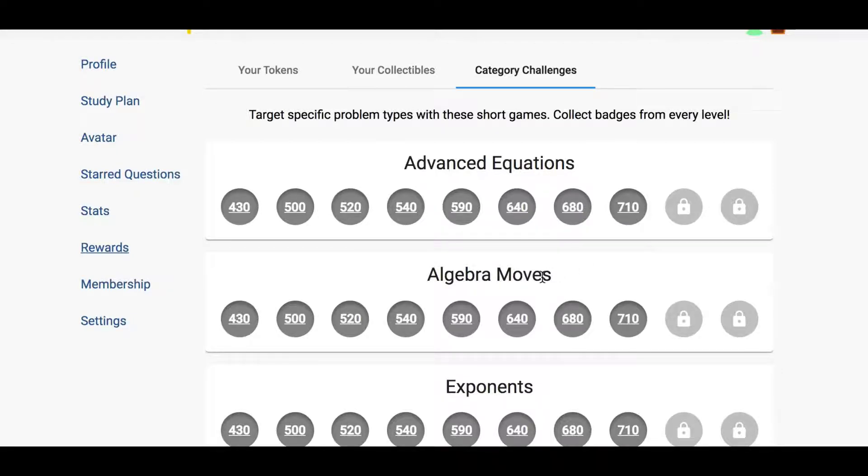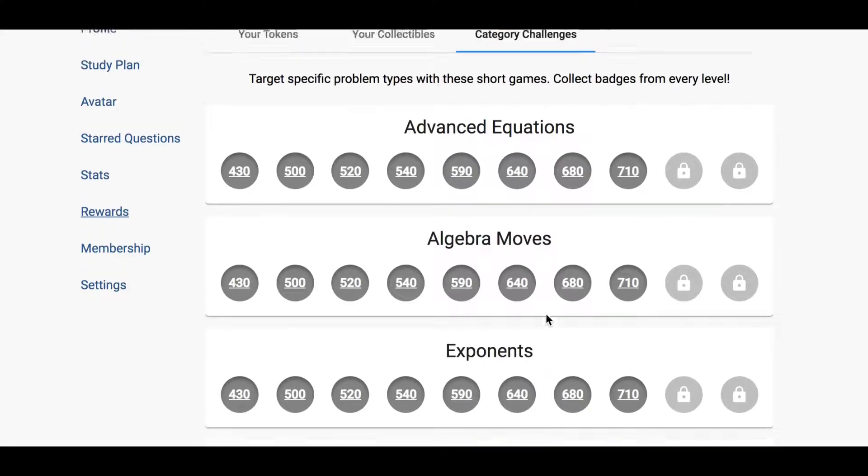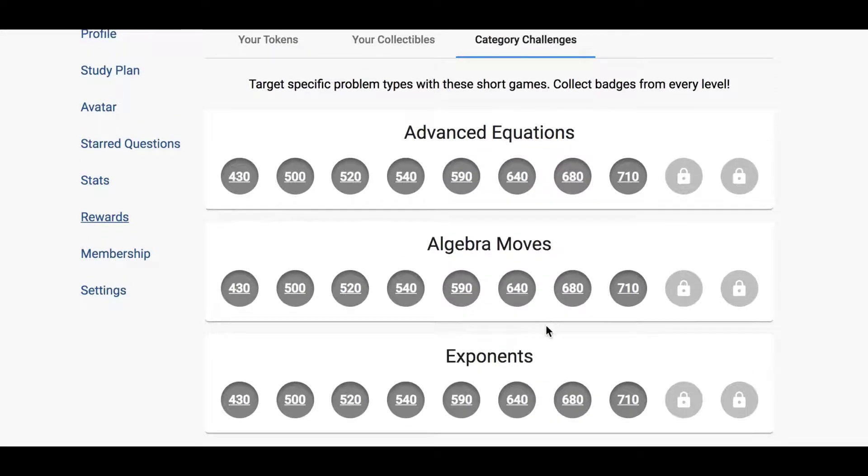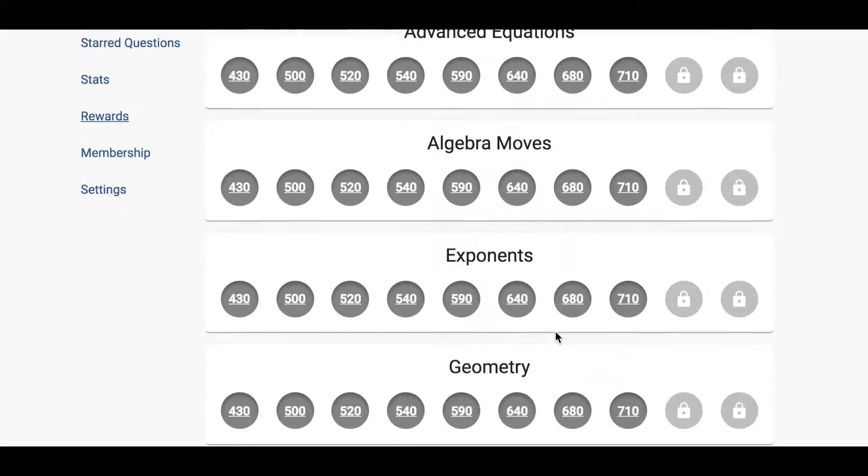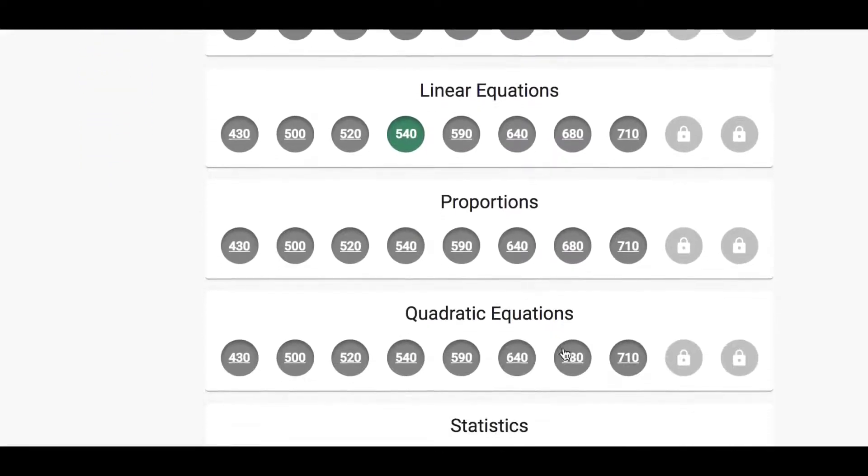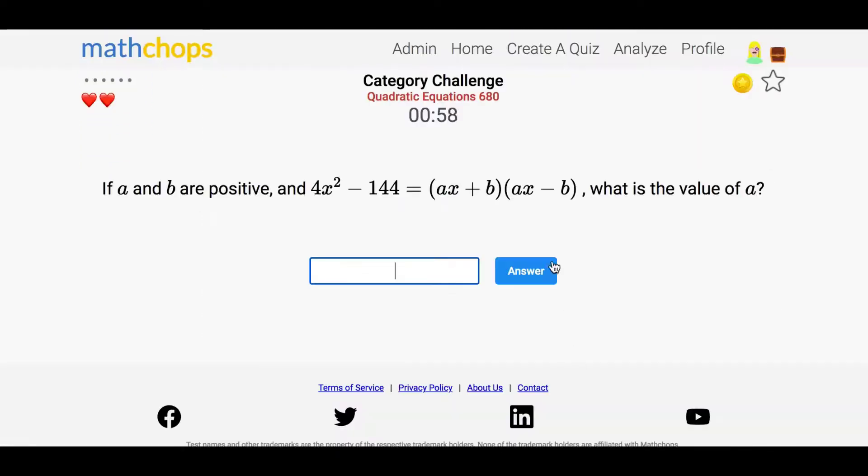And there are a couple of different ways to assign category challenges to students. One is to work one category at a time, get level 680 and 710 in algebra moves and then move on to exponents. Another is just to say your assignment this week is to earn three level 680 badges and you pick the ones that you want to work on. Either way, they're a great way to hunt for these random questions that maybe show up two or three times every 10 tests. You can't ignore them if you're trying to get a 750 or higher, but you do want to find a lot of them quickly.